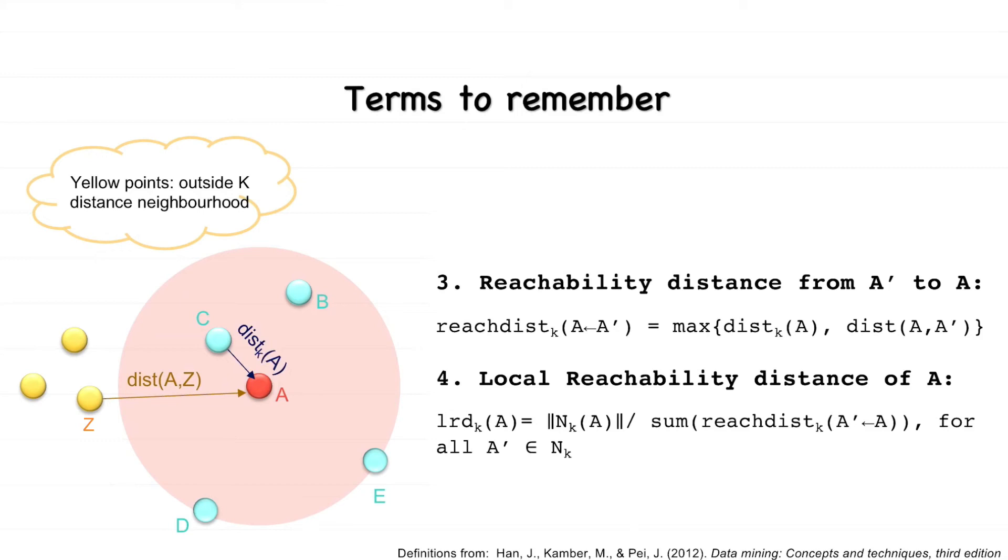The local reachability distance of A is the inverse of the average of the reachability distances of all the neighbors of A. If the local reachability distance is high, it means that the neighbors of A are far away and A is in a low density region.